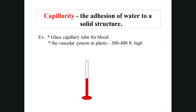Capillarity is the attraction of water to a solid structure. If you've seen a glass tube with water in it, the water isn't straight across — the edges are higher than the center. This is called a meniscus, which you'll see in your lab exercise.